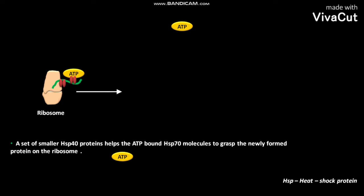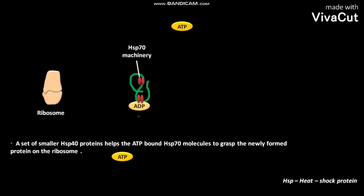In the next step, the Hsp-70 protein hydrolyzes its bound ATP to form ADP and Pi. Due to this ATP hydrolysis, the Hsp-70 molecule undergoes a conformational change. Due to this conformational change, the Hsp-70 molecule associates more tightly with the released protein from the ribosome. The ADP and Pi formed due to ATP hydrolysis are then released.